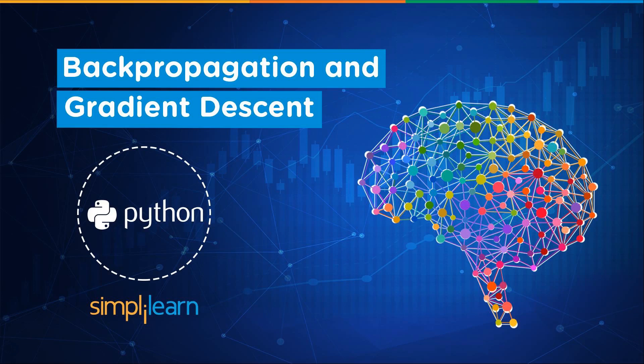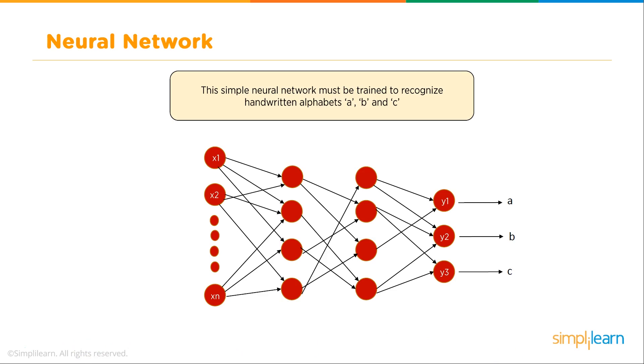When we're talking about back propagation and gradient descent, we're talking neural networks. This is a simple neural network which must be trained to recognize handwritten alphabets A, B, and C. You can see here we have our input coming in.